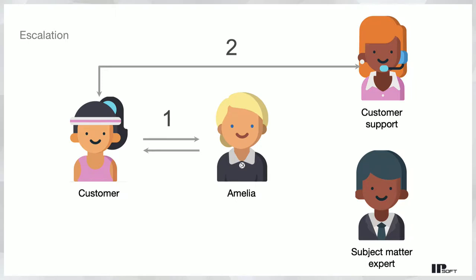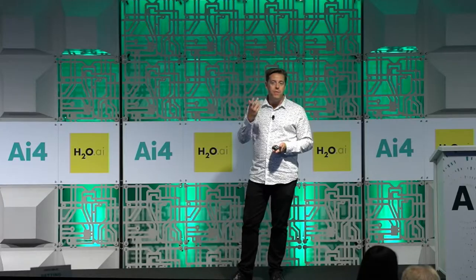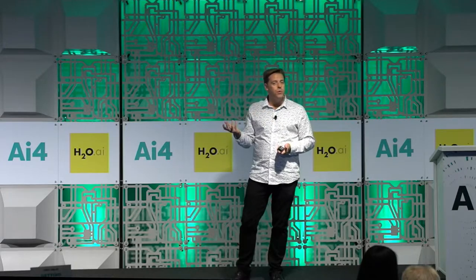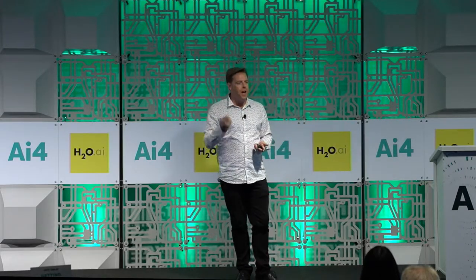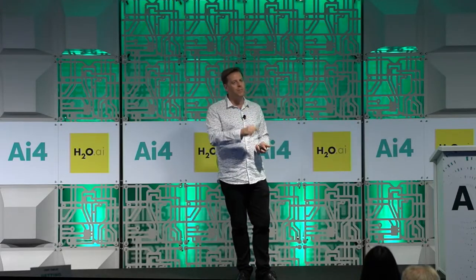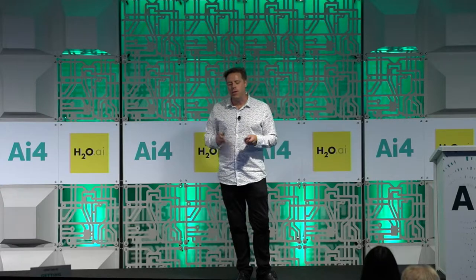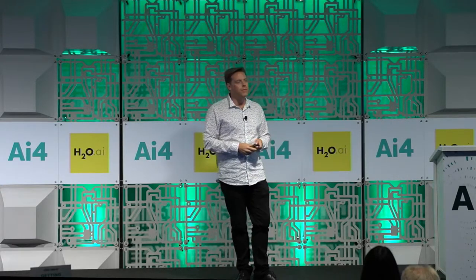The next pattern is escalation. There are certain things machines should not be doing. The usual case is that the machine doesn't understand or can't take action, but the more important case is that there are still times when it's appropriate for a human being to be involved — particularly when we talk about compliance or regulatory issues. You need a human being to check the box once they've reviewed the information. Escalation is a key aspect of these types of agents.